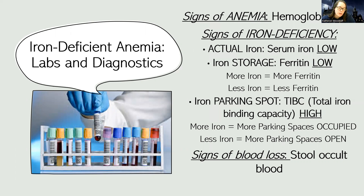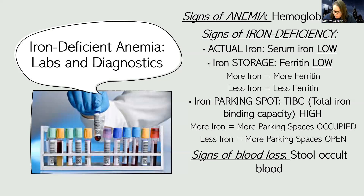There are three main labs we look at for iron problems. First is actual serum iron — and of course, as the name suggests, it's going to be low. There's also ferritin, which is a part of the iron storage process. If I'm low on iron, I'm not going to need to store as much iron, so my ferritin is going to be low.